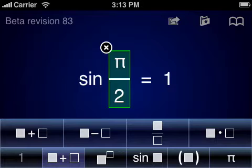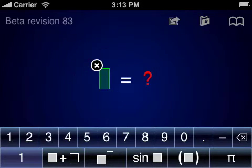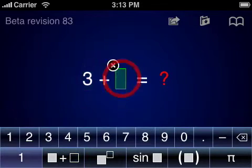Pi Cubed takes advantage of the large touchscreen of the iPhone and iPod Touch to typeset and layout equations as you enter them, and to display the results of calculations with up to 34 digits of decimal precision.